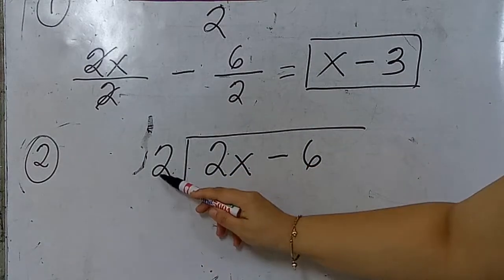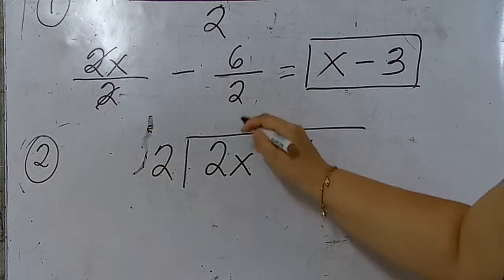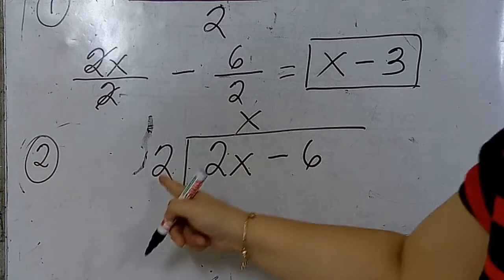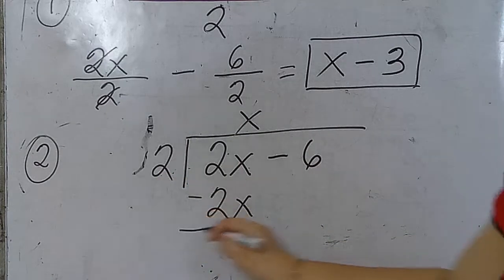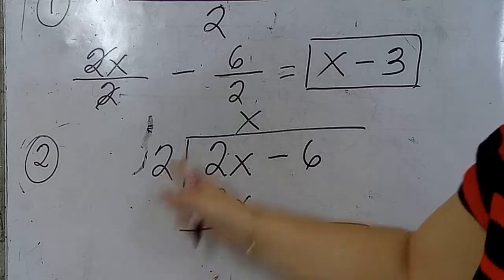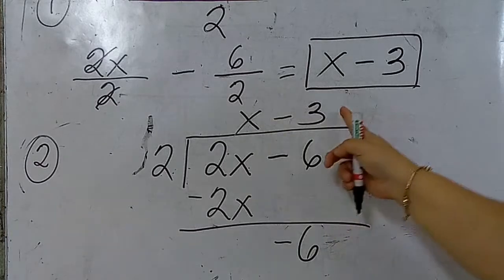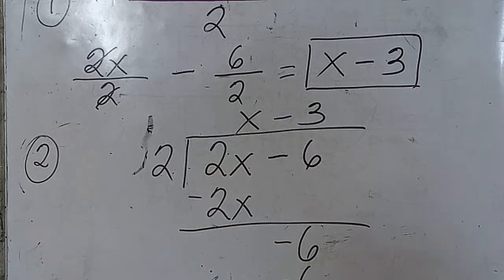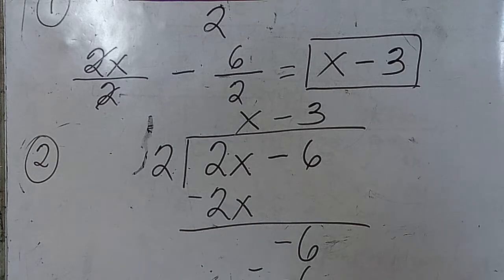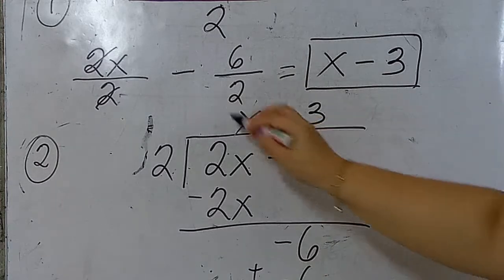2x divided by 2 — x is what remains. x times 2 is 2x. That's subtracted, giving 0. What remains is negative 6. Negative 6 divided by 2 is negative 3. Negative 3 times 2 is equal to negative 6. Then we subtract. In subtraction of integers, change the sign of the subtrahend and proceed to addition. So negative 6 plus positive 6 is equal to 0.